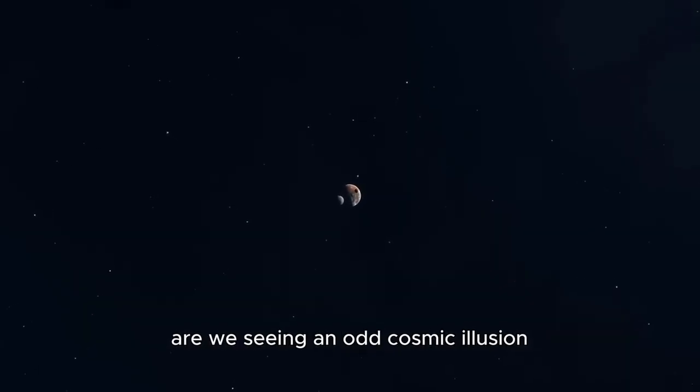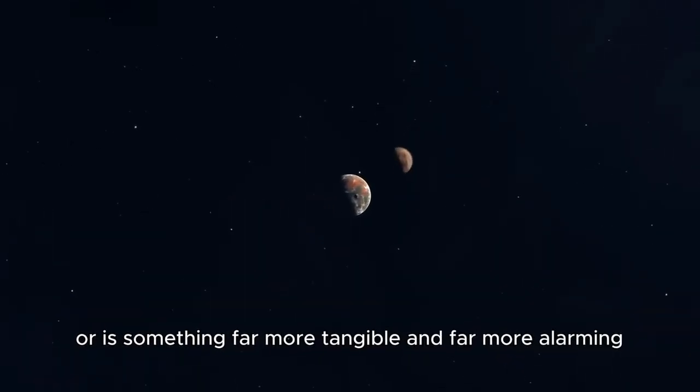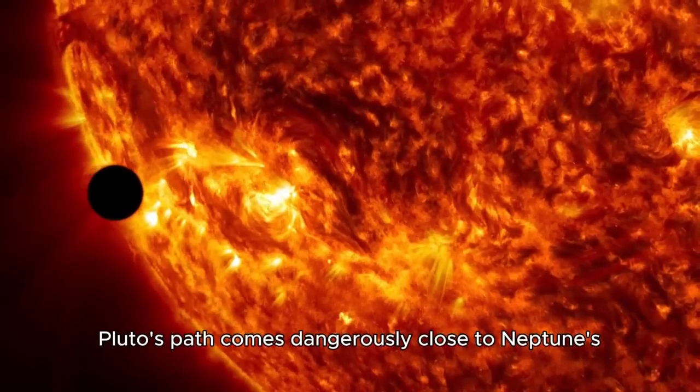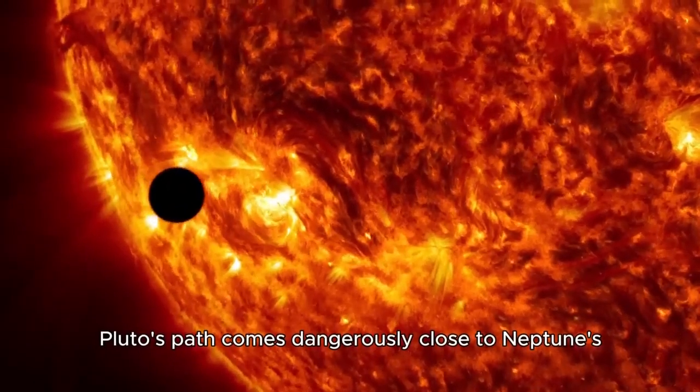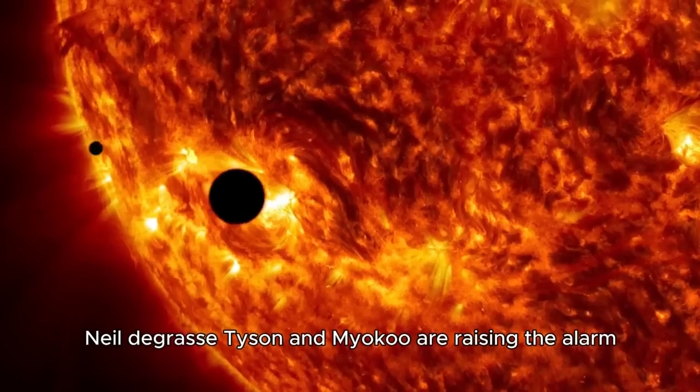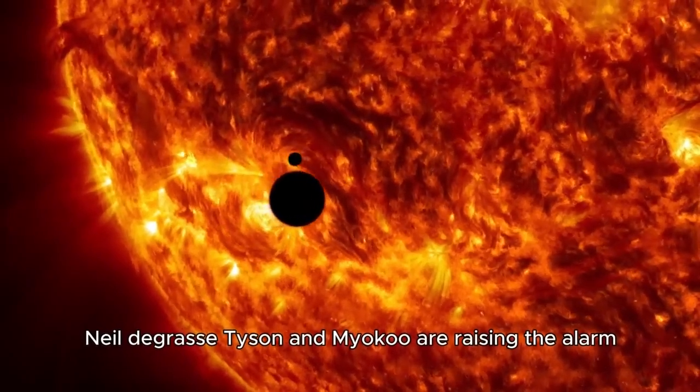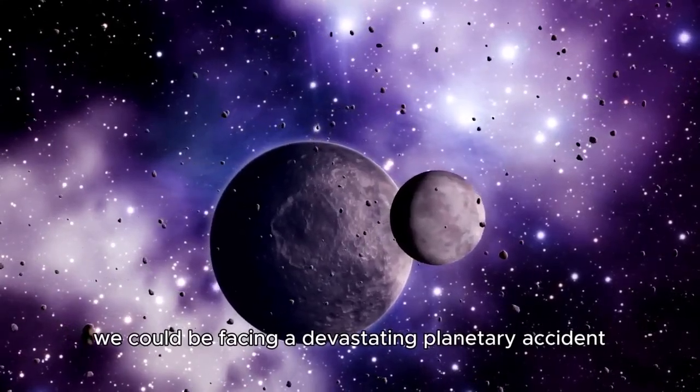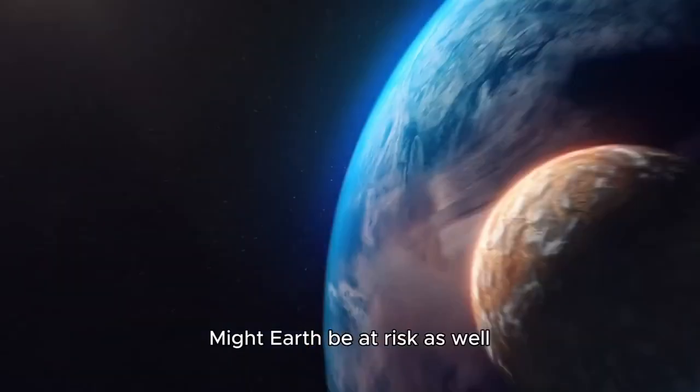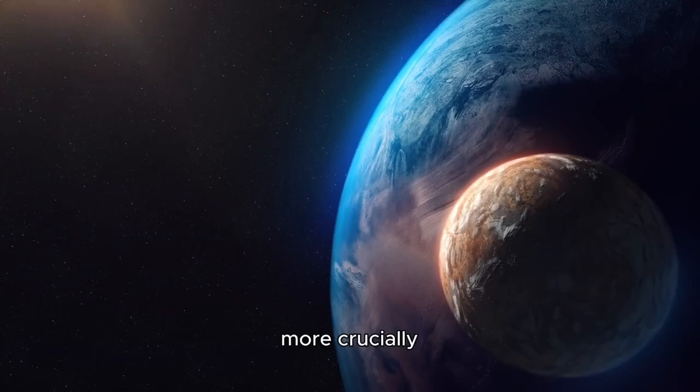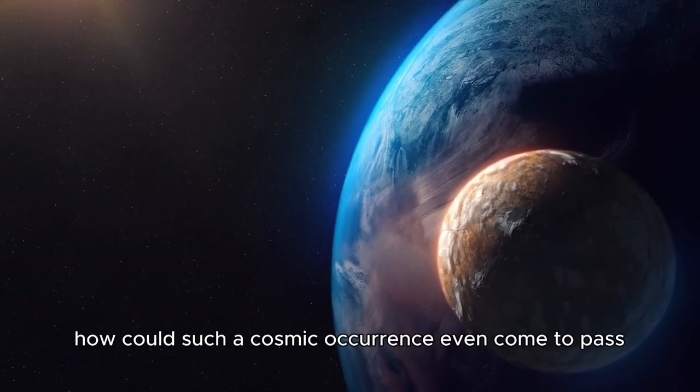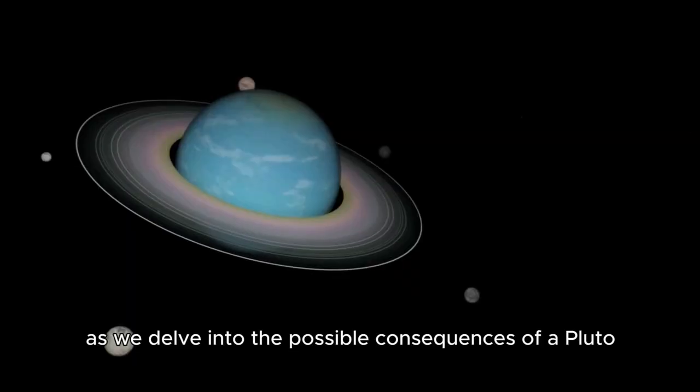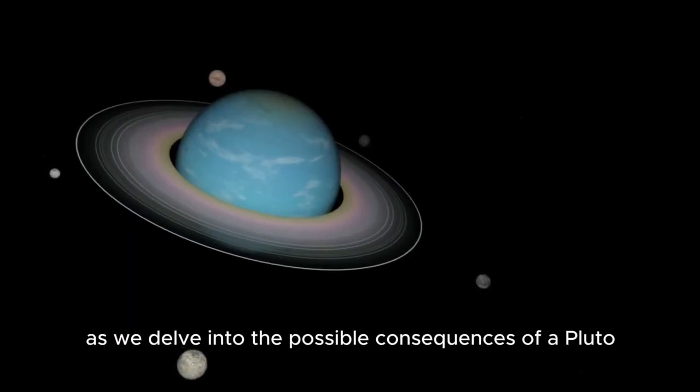Are we seeing an odd cosmic illusion? Or is something far more tangible, and far more alarming, speeding toward us? Pluto's path comes dangerously close to Neptune's. Neil deGrasse Tyson and Michio Kaku are raising the alarm. If there's even a slight adjustment, we could be facing a devastating planetary accident. Might Earth be at risk as well? More crucially, how could such a cosmic occurrence even come to pass? Join us as we delve into the possible consequences of a Pluto-Neptune collision.